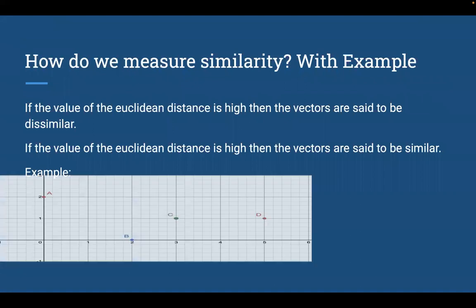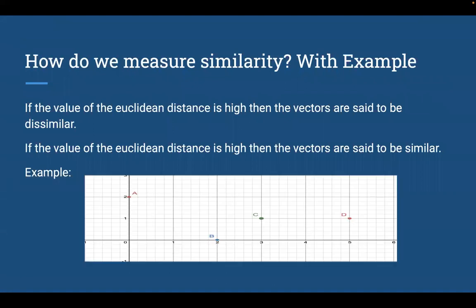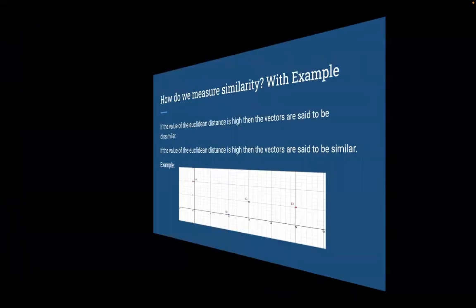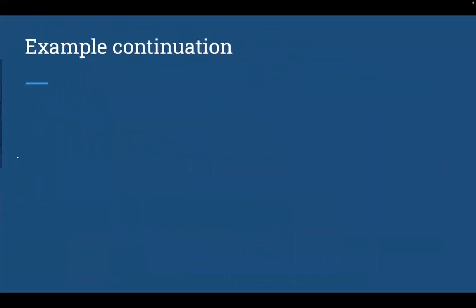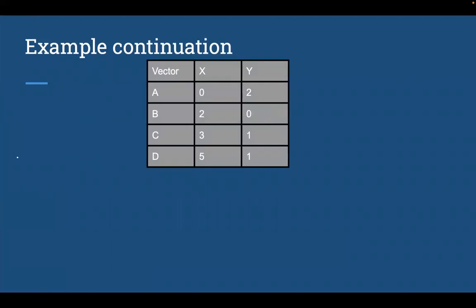For example, let's consider four points A, B, C, D that are marked down in this slide. Let's find the similarities between them by using the Euclidean distance formula which we have discussed earlier. To make it clear, let's mark the x and y attributes of the given four vectors. A has 0, 2 as their x and y attributes. B has 2, 0 as x and y attributes. C has 3, 1 as x and y attributes. D has 5, 1 as x and y attributes respectively.